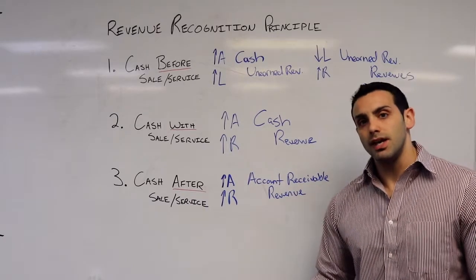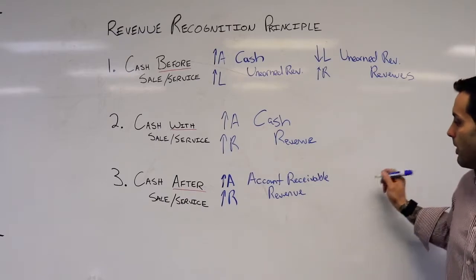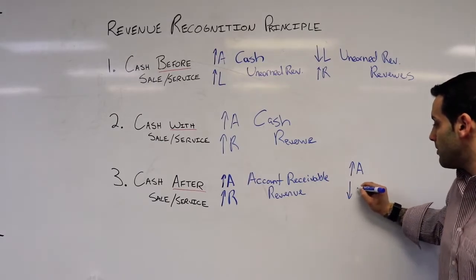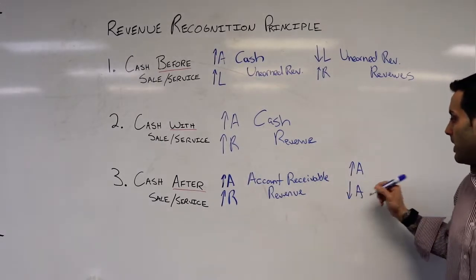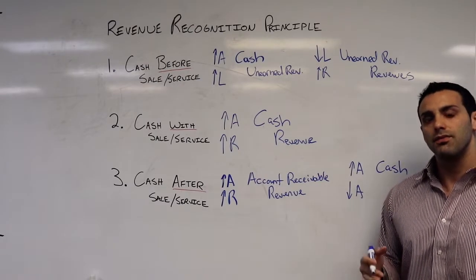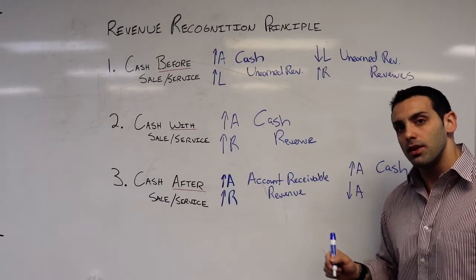When they do decide to pay us the cash, I am going to increase an asset. At the same time, I'm going to decrease an asset. And what I mean by that is we're going to debit cash because we received the cash from that customer. But I need to kill this account receivable with the credit.